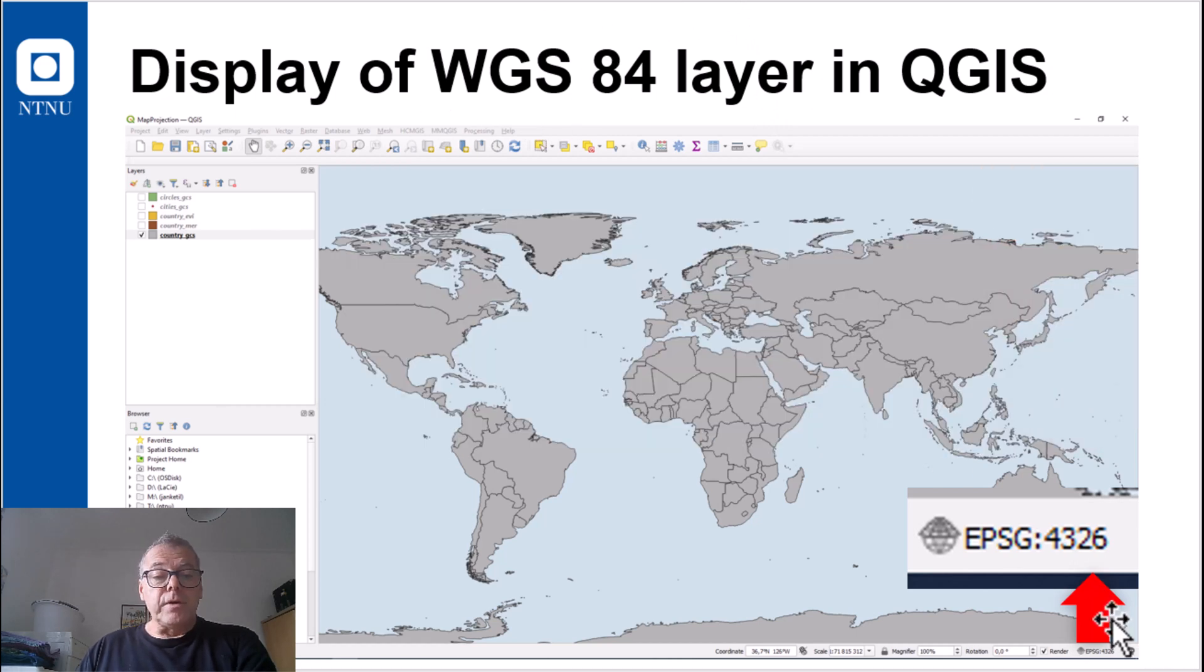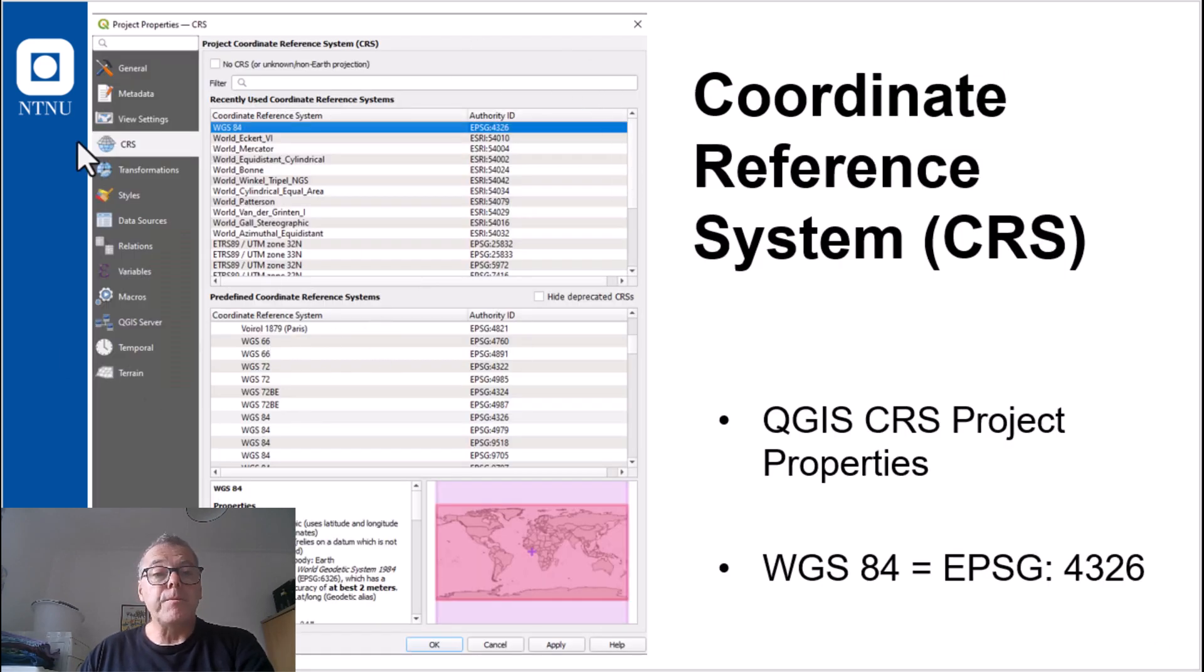And the lower right corner is also one of the entries to the project properties. Click on this and you can open project properties and this dialog appears. And here you may change the way the layers are displayed. This will not change the stored coordinates. This will still be in WGS84. But you may display them according to a different coordinate reference system.